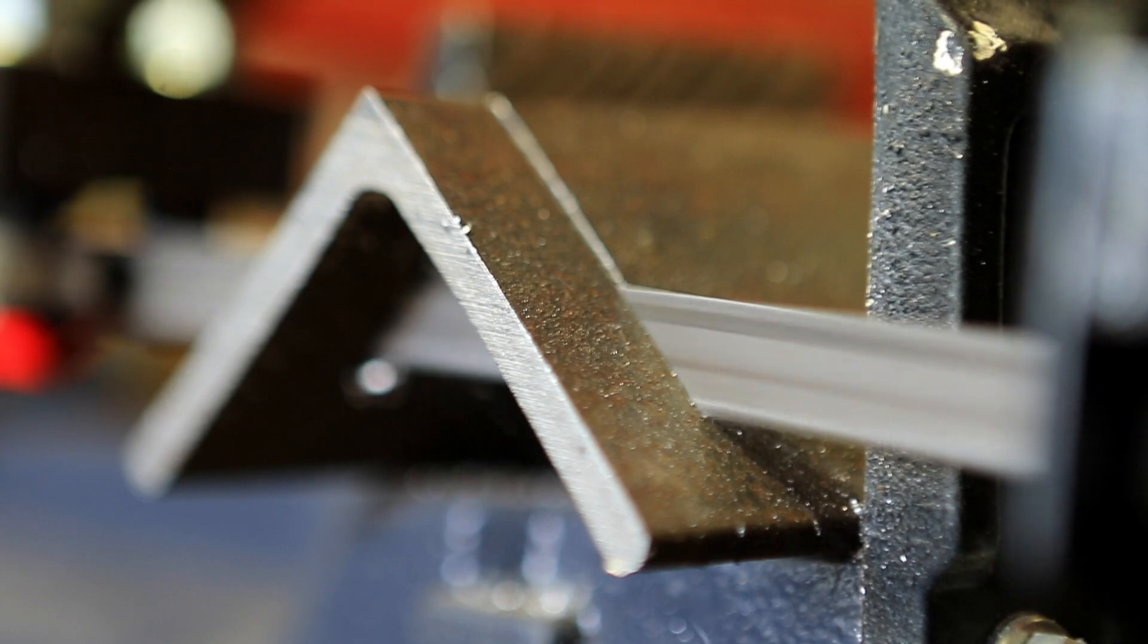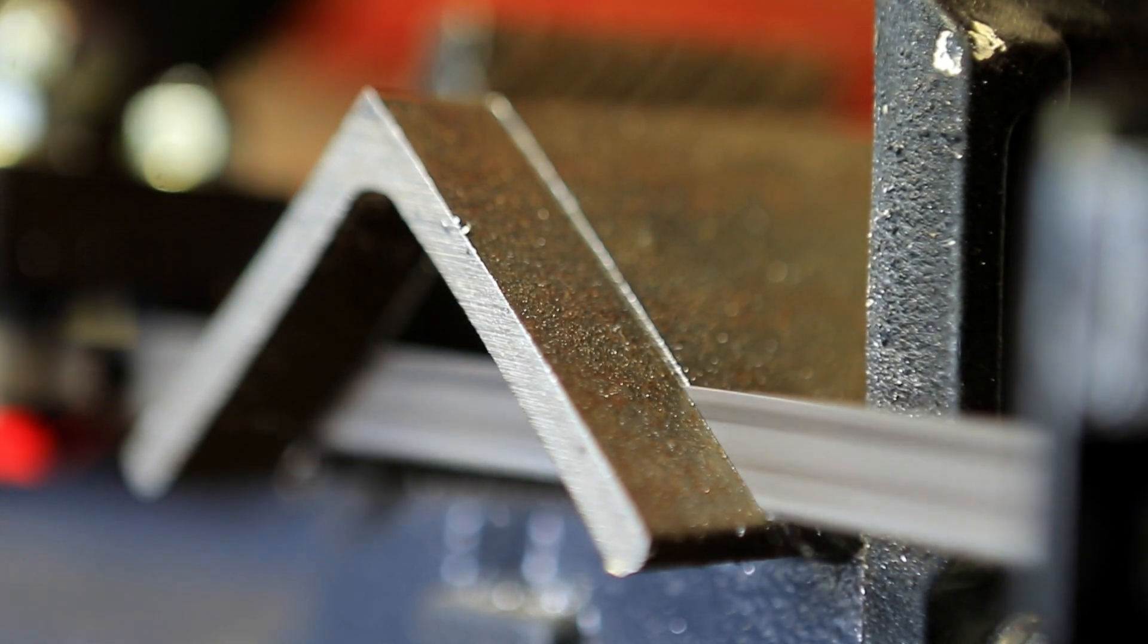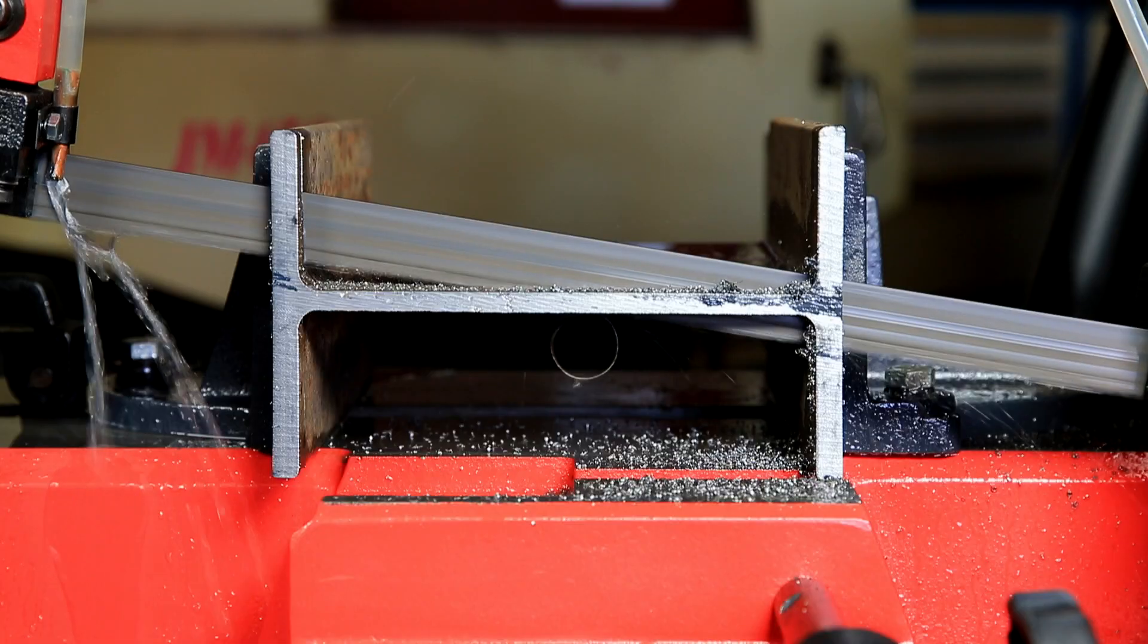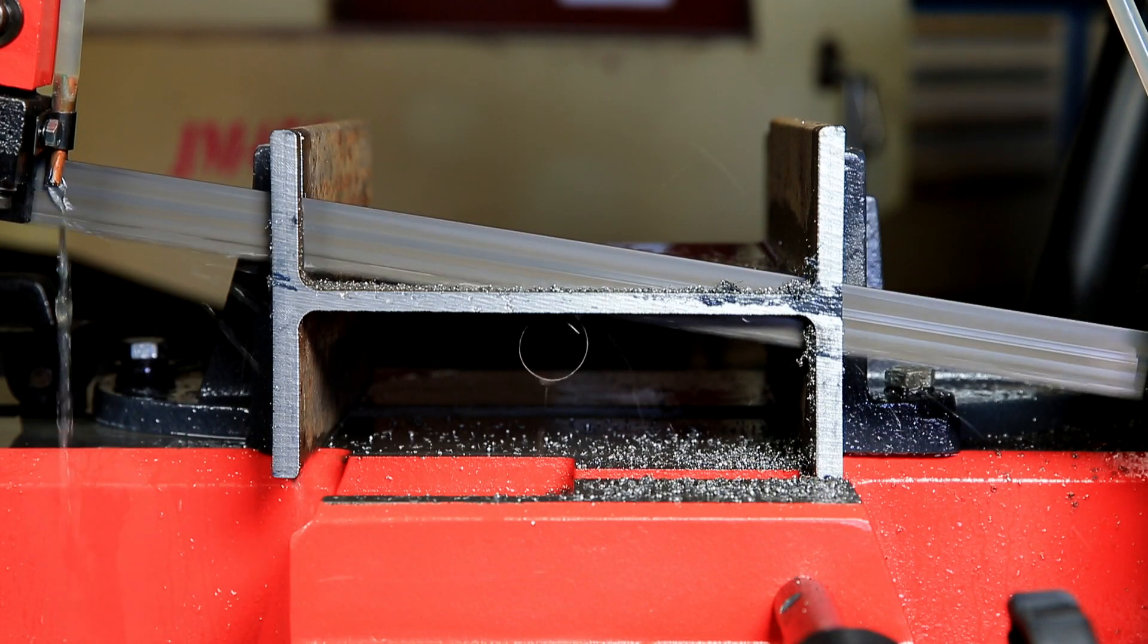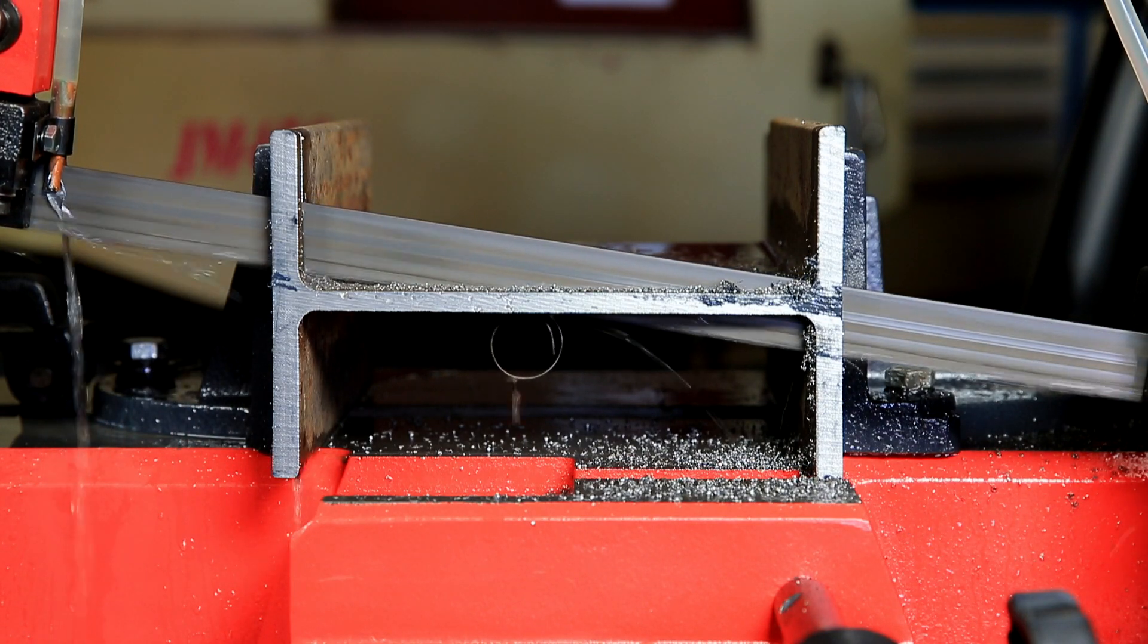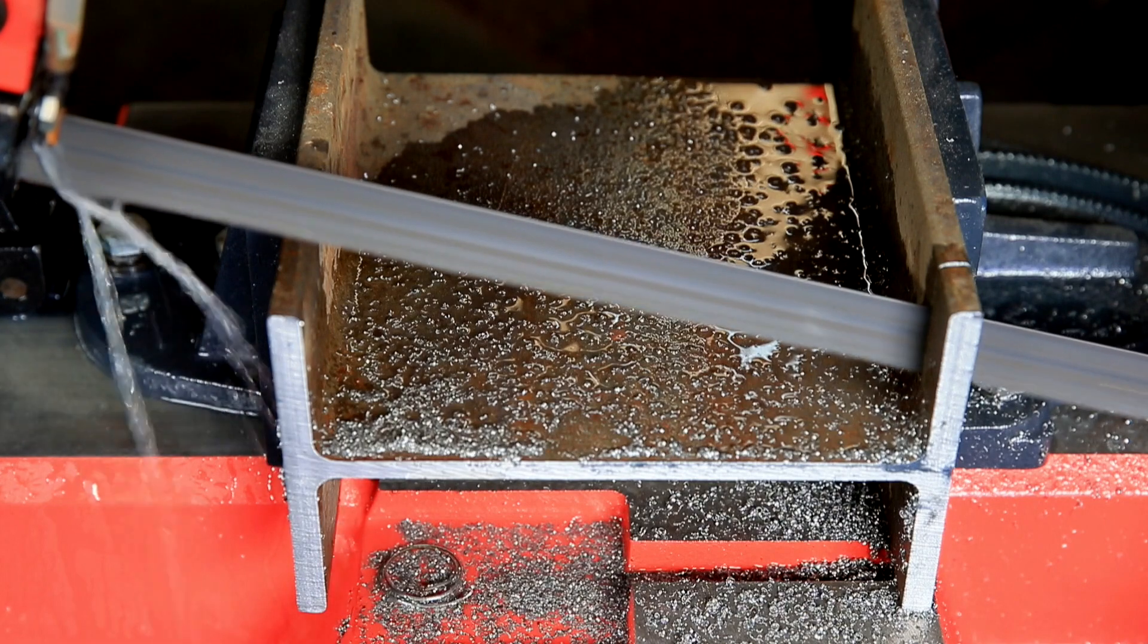Most people that are cutting general purpose materials would use our 5-7 tooth interrupted cut band. If you have wider flange beam or bigger cross sections, you may go down to a coarser pitch, which is our 4-6 IC band.